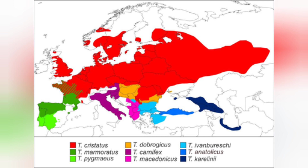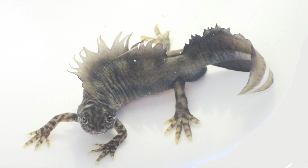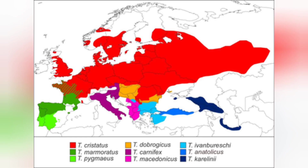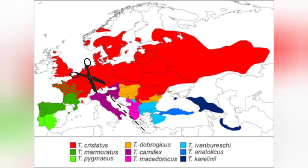Moving into Italy, we have Triturus carnifex, commonly known as the Italian crested newt or the alpine crested newt. As well as Italy, this species is also found to the east in southeastern Austria, Slovenia, parts of western Croatia, and northern Bosnia. There is currently some research going on which may in the future separate Triturus carnifex into two different species, with that split likely to be placed around the northeastern region of Italy, essentially separating the majority of the Italian carnifex from the eastern range of the species.